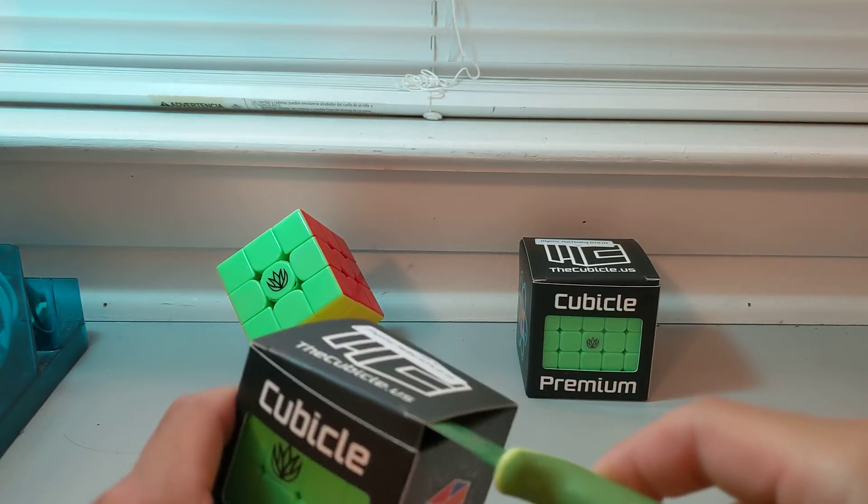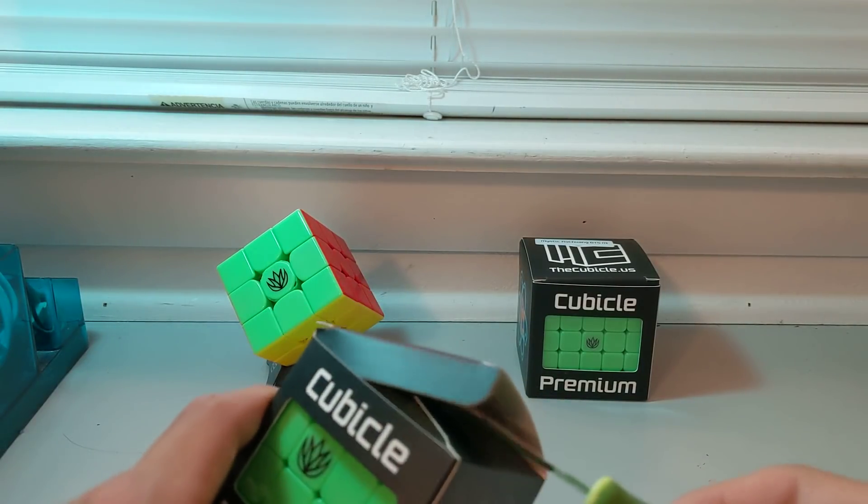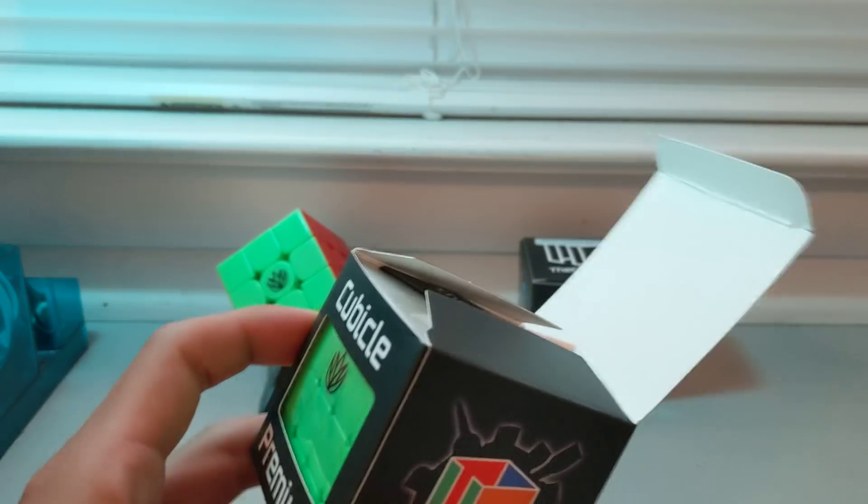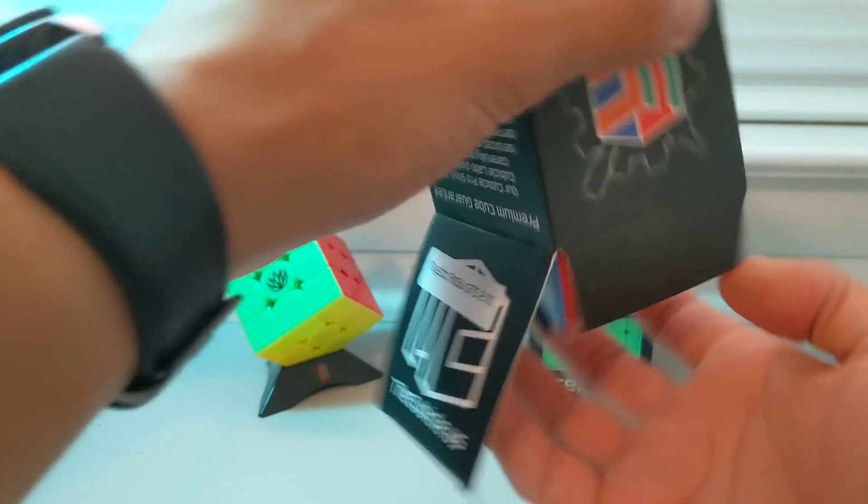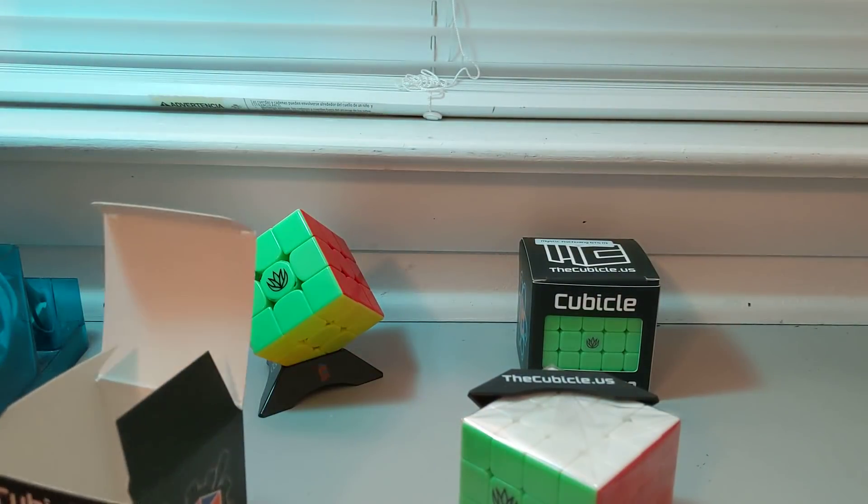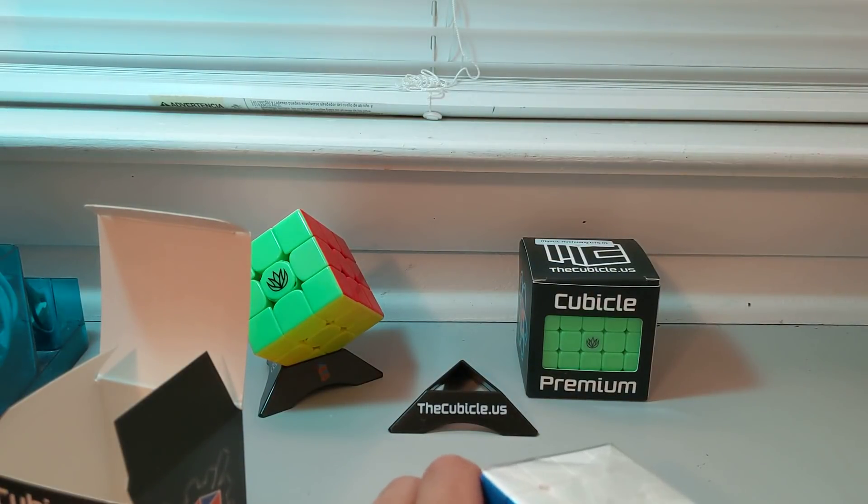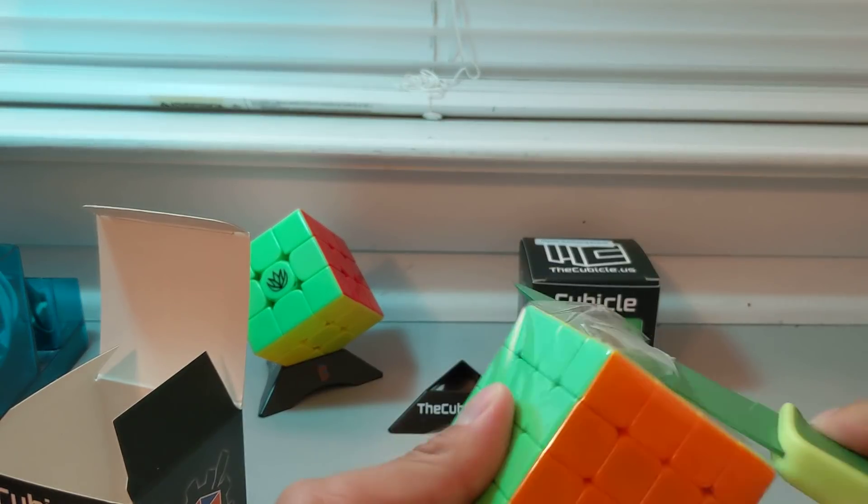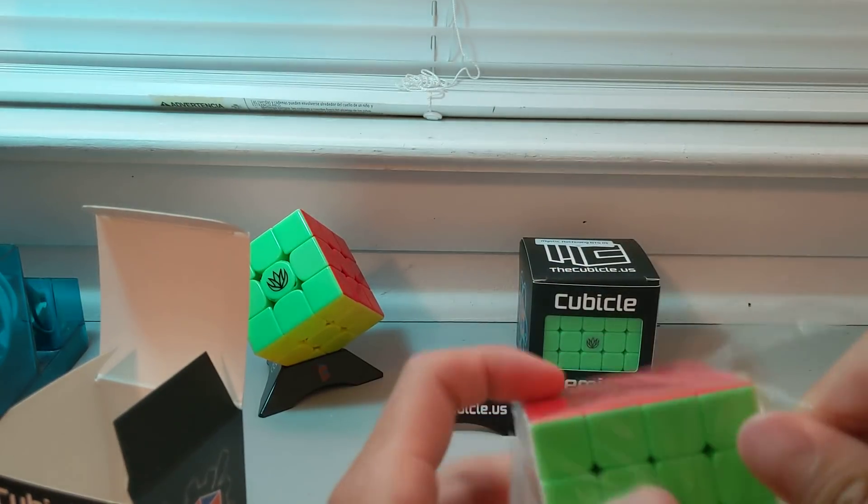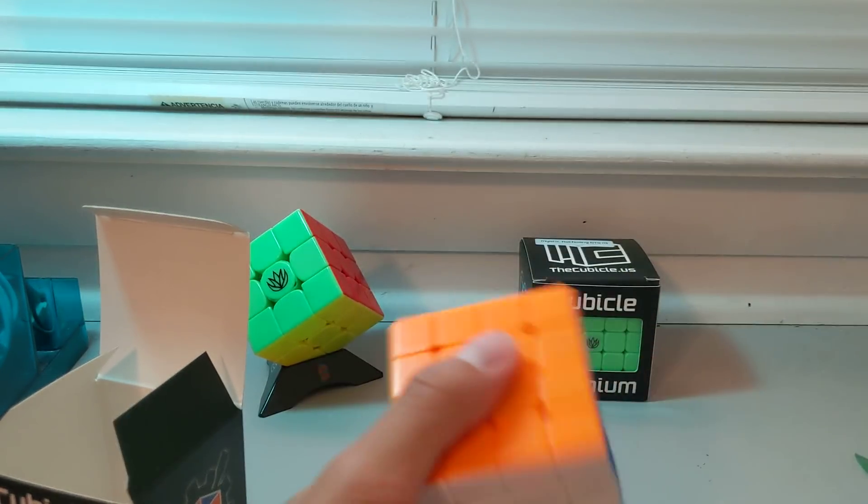I've got the Aosu. Come on. Big boy. Also comes with its own stand. We are again going to use this handy dandy knife to open Sesame. Beautiful.